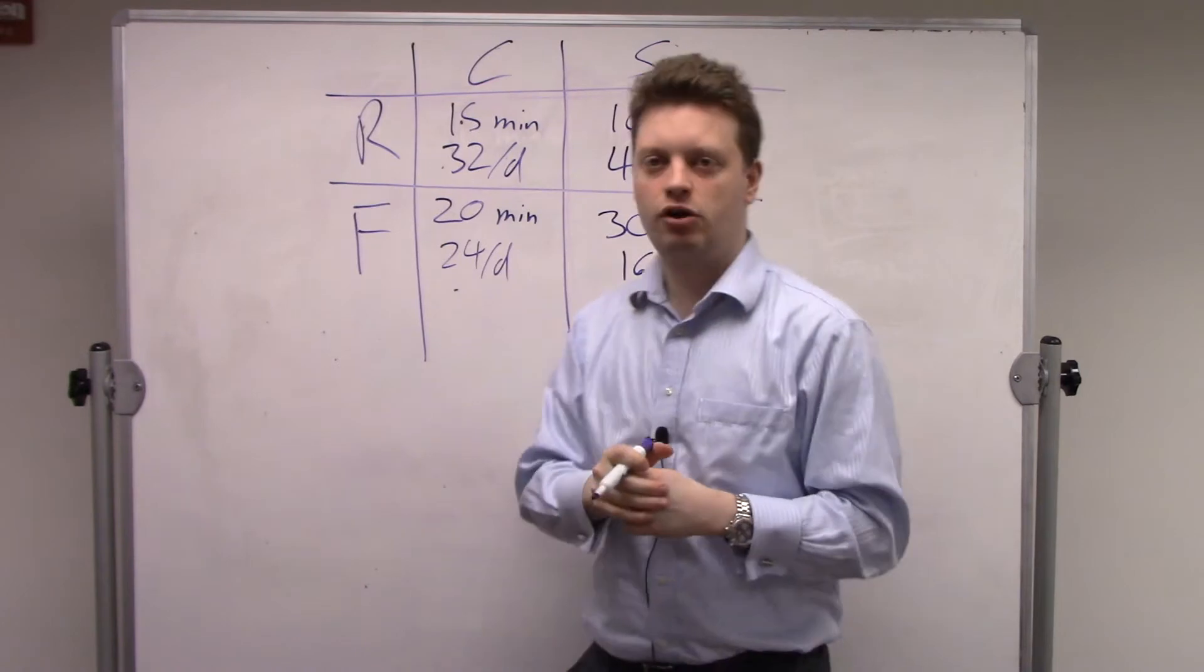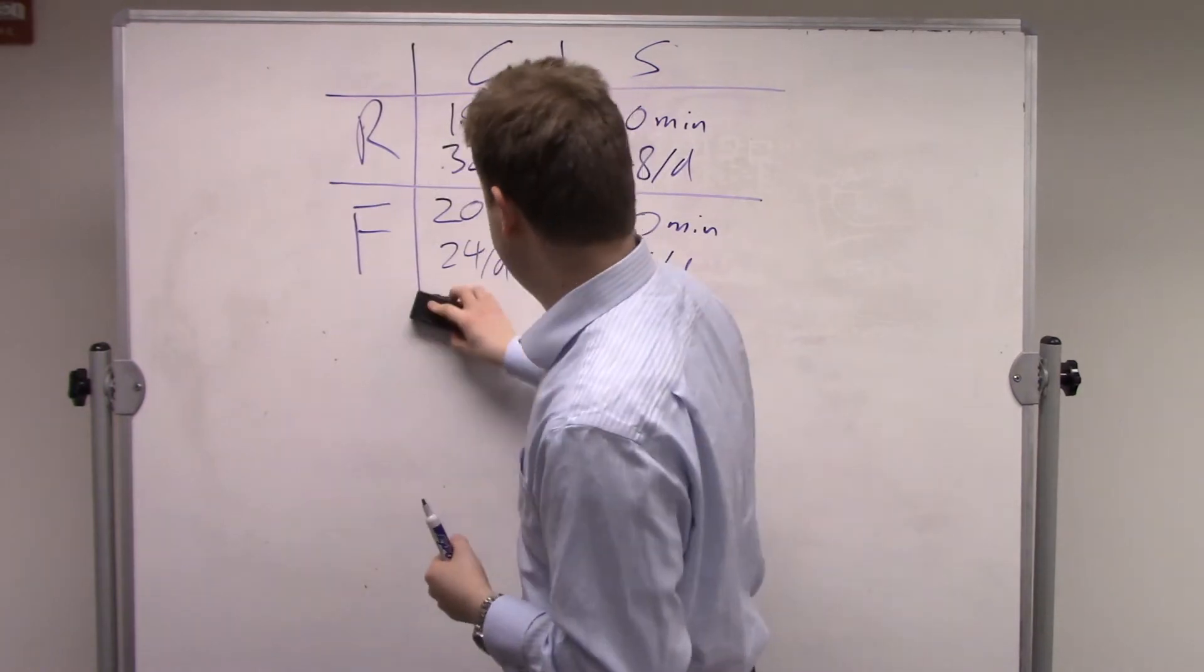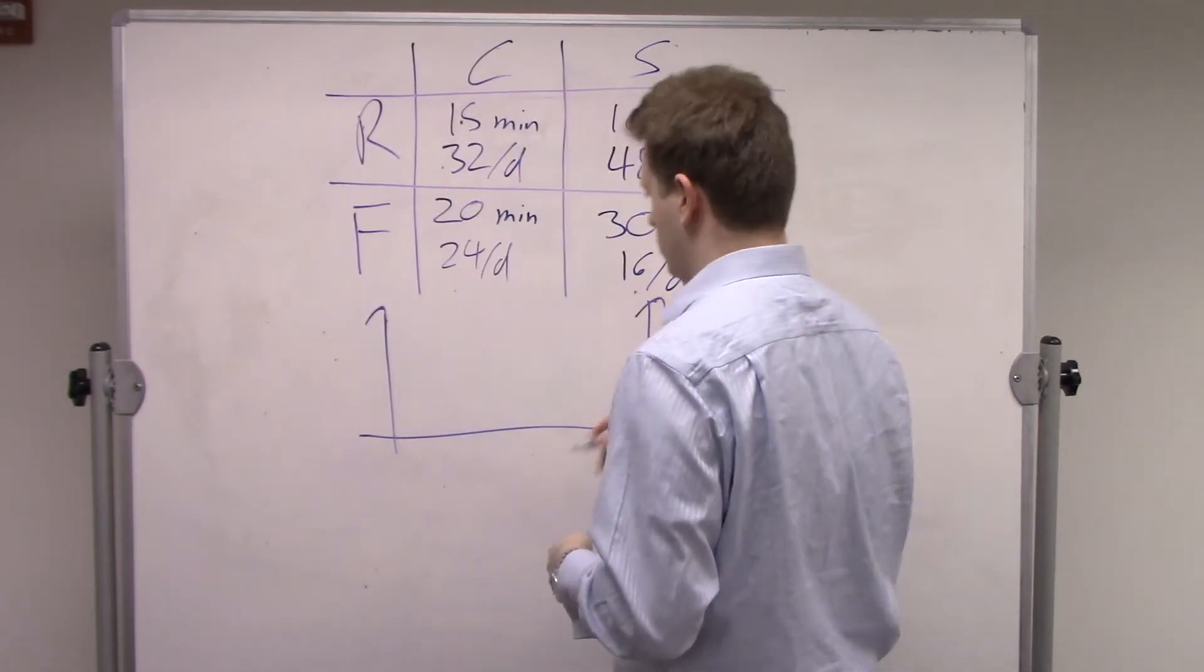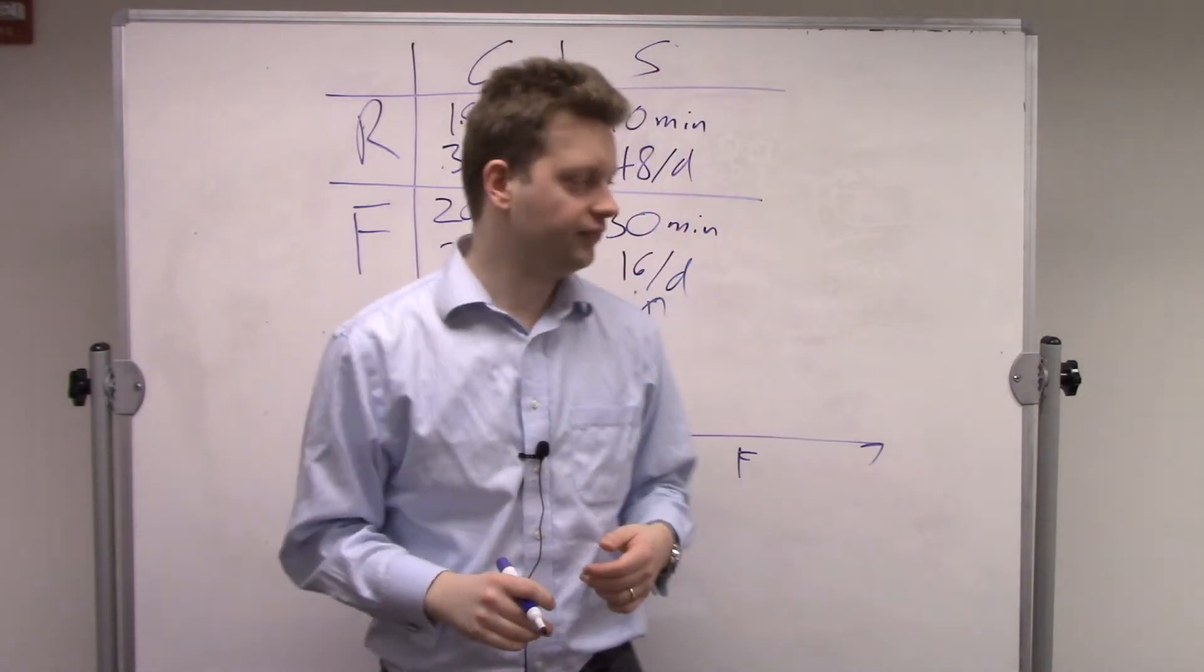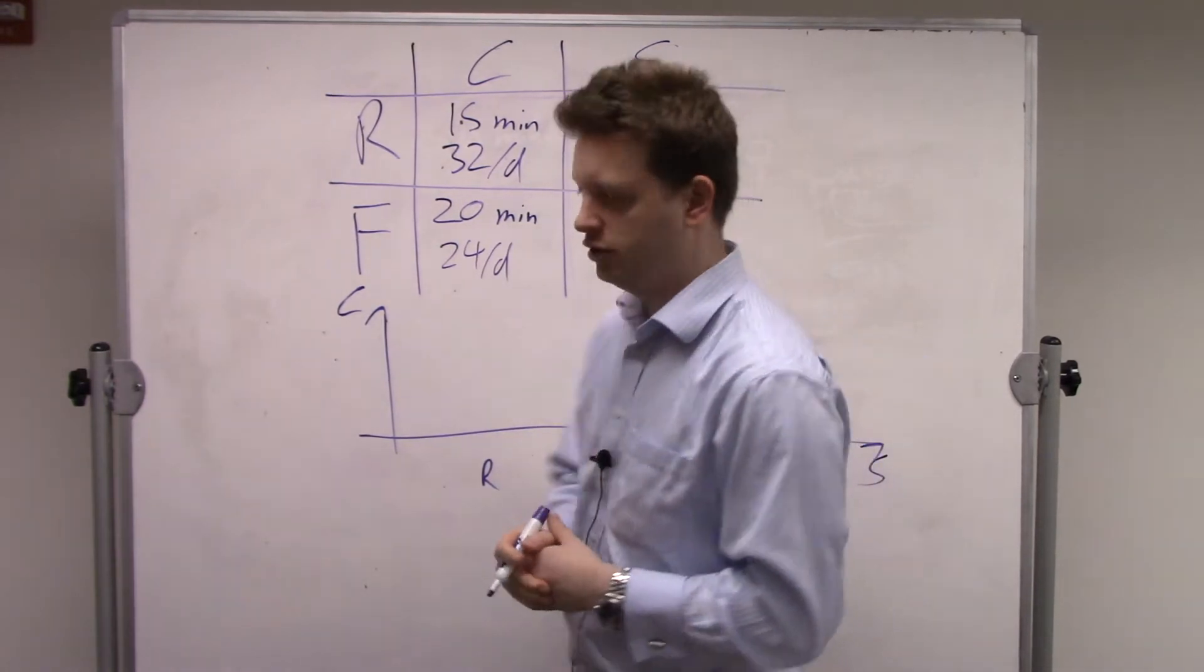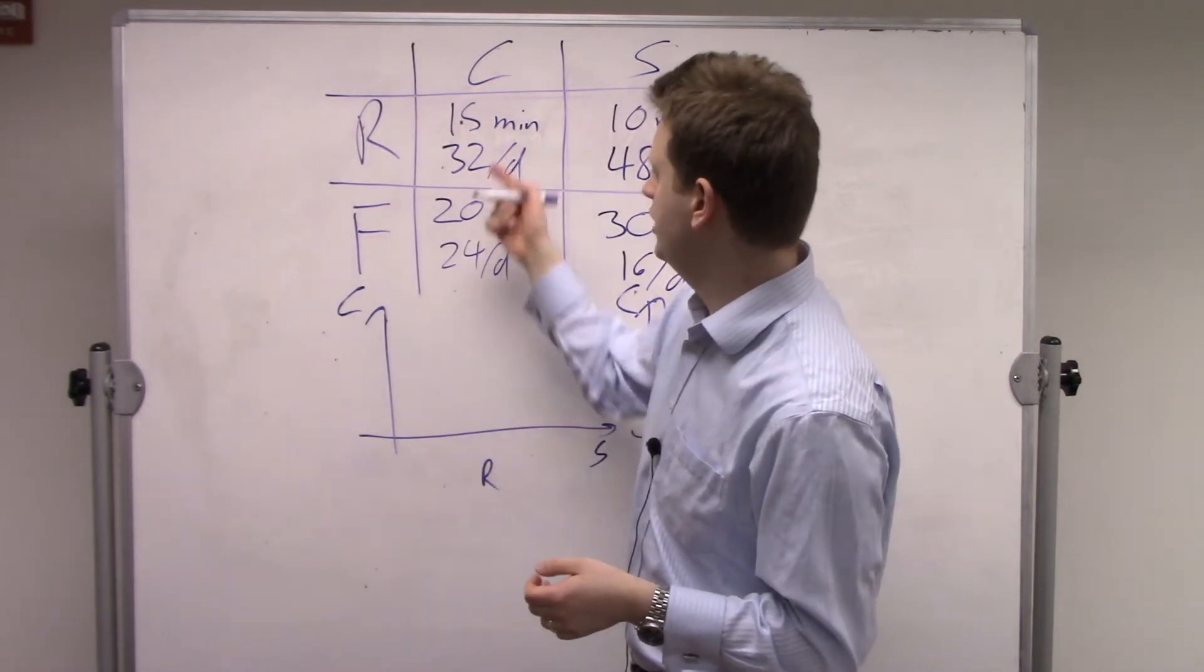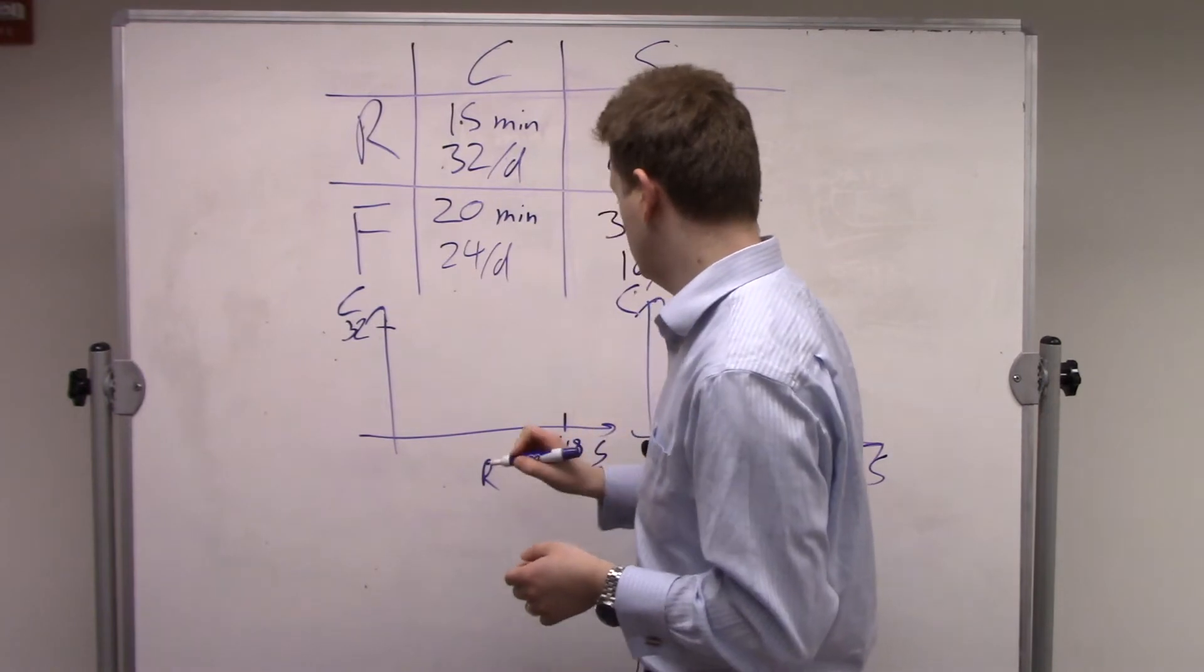Based on that, let's now draw a production possibility frontier. We have two people, Robinson Crusoe and Friday, and we have two goods, coconut and fish or salmon. We start with Robinson Crusoe, and we want to look at what they can produce in one day. So he gets either 32 coconut or 48 salmon.